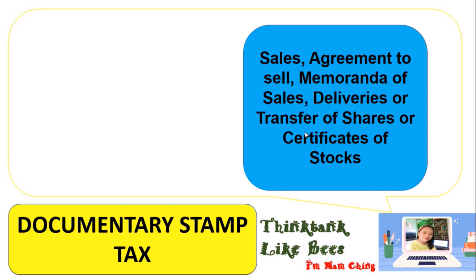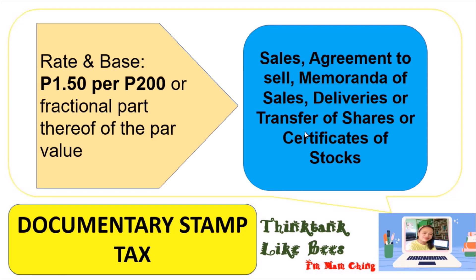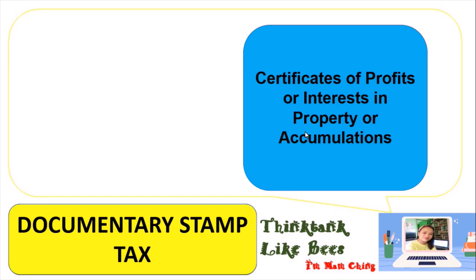Next, for sales agreements, agreements to sell, memoranda of sale, deliveries, or transfers of shares or certificates of stock, the rate is 1.50 pesos for every 200 or fractional part thereof of the par value. For example, with 20,000 worth of certificates of stock or agreement to sell: 20,000 divided by 200 equals 100, multiplied by 1.50 pesos equals 150 pesos in documentary stamp tax.